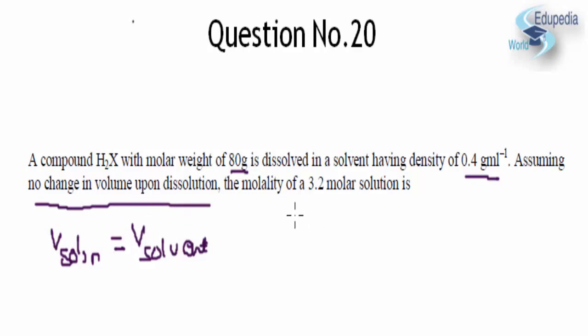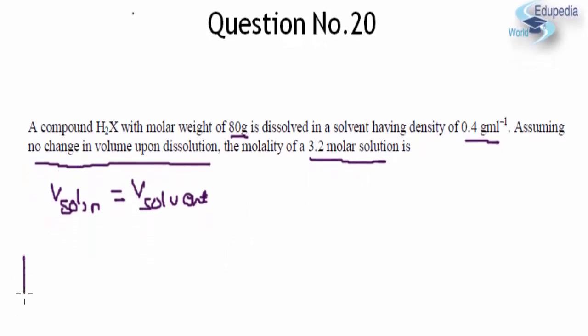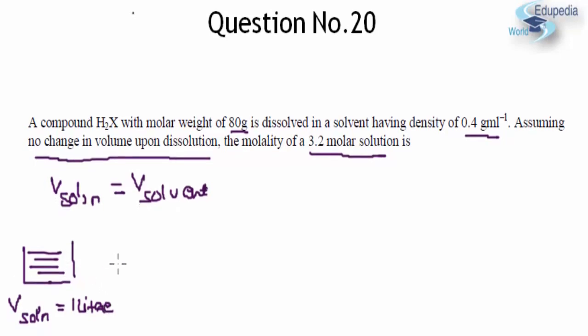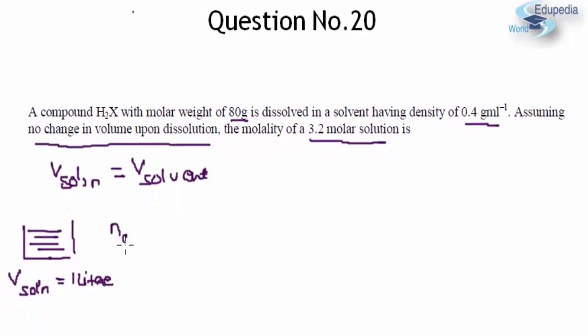Further we have been asked to find the molality of a 3.2 molar solution. So now if I consider a 1 liter solution, that is volume of the solution, the moles of solute n_solute in the solution will be equal to 3.2 moles.